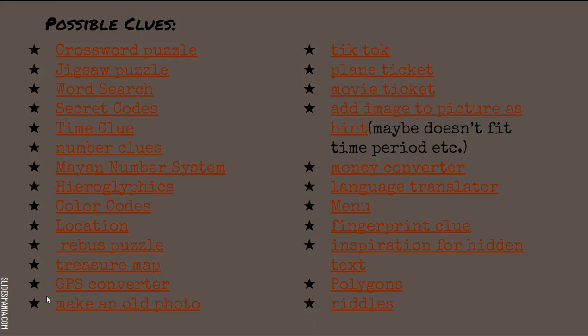Here are some clue types I like to use, and all of these are live links taking you to sites I like to use for them. You can make your own crossword puzzle. My favorite thing to do with jigsaw puzzles is create your own image in Google Drawings that has a clue in it. Using a word search you create, or secret codes, a time clue — all of these are amazing and you can use a real variety depending on what you're specifically doing.